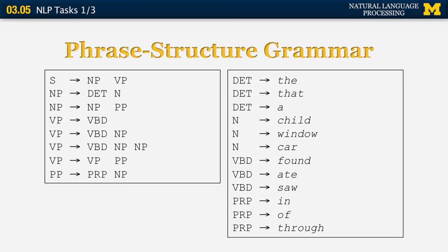To interpret these rules: if we want to generate a sentence or parse a string, we look for a noun phrase followed by a verb phrase. A noun phrase can be either a determiner followed by a noun, or a noun phrase followed by a prepositional phrase. An example of a determiner-noun would be 'this cat.' For the NP to NP-PP rule, we would have something like 'pizza with olives,' where 'pizza with olives' is a noun phrase and 'with olives' is the prepositional phrase.